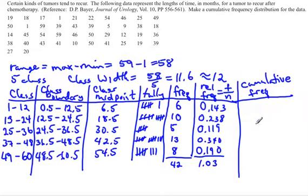What the cumulative frequency is, is it says how many data values fall below the upper class boundary of each class. So for the 12.5 data boundary, you will notice that there are six data points that fall below 12.5. So therefore, the cumulative frequency here for the first class is 6.